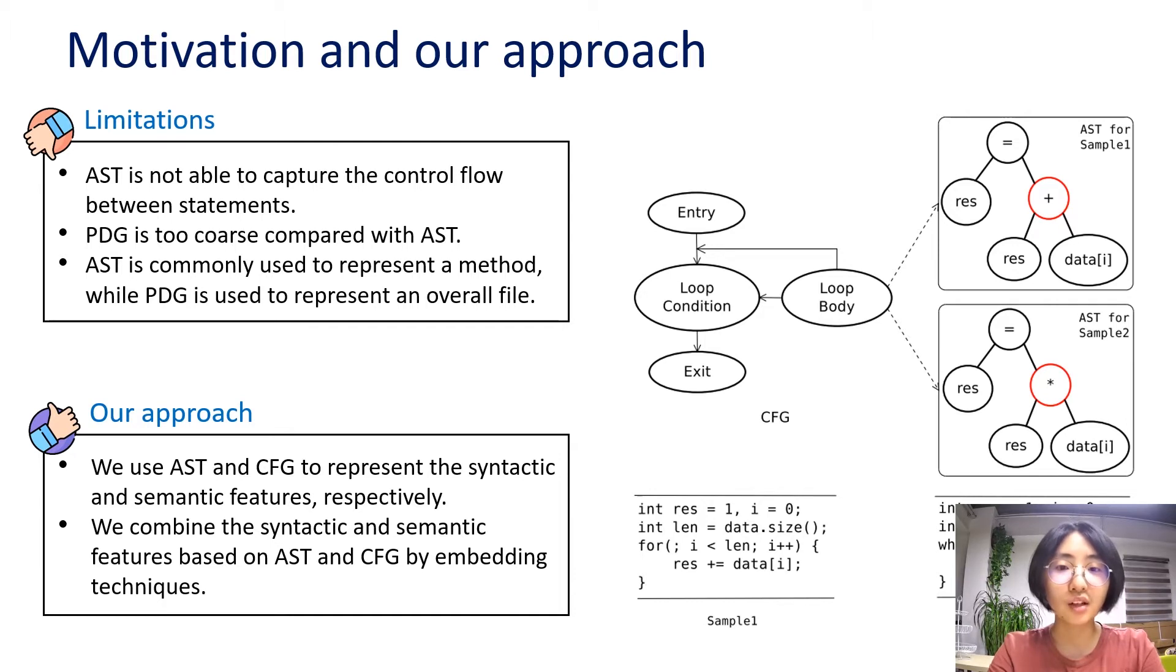Besides, the PDG for complex code can be extremely complicated and computing graph isomorphism is not scalable. Moreover, AST is commonly used to represent a method, while PDG is used to represent an overall file. Thus, most existing approaches compare code clone similarity at the granularity of a single method or a single file. To improve the existing approaches, we detect functional code clones through syntax and semantics fusion learning. As can be seen in the figure, we use AST and CFG to represent the syntactic and the semantic features respectively. Such a fusion code representation can describe the code function more accurately and the effect of functional code clone detection is also better.